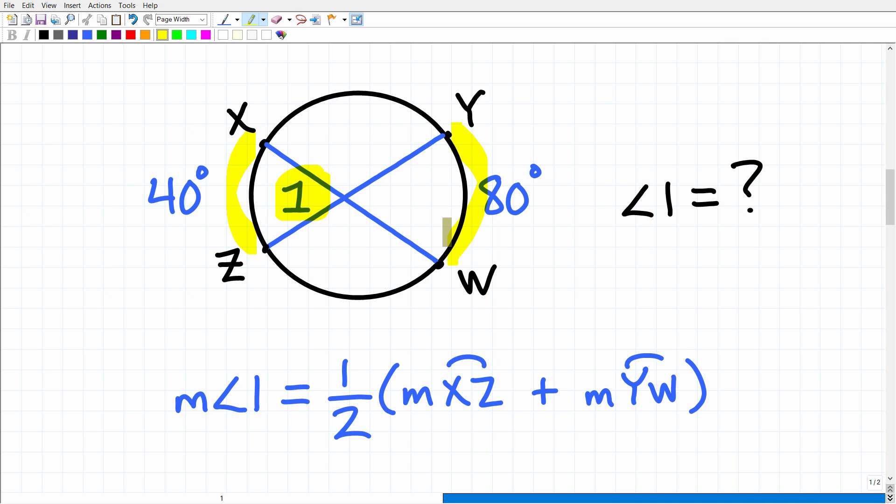Well, what we want to do is take the average of these arcs that are formed with these two chords. So basically, all we need to do here is take 40 degrees, add it to 80 degrees, which is the measure of these two arcs, and then take one half of that, and that is going to get us this angle right here, angle 1, which is the same as this angle because these angles are vertical angles.